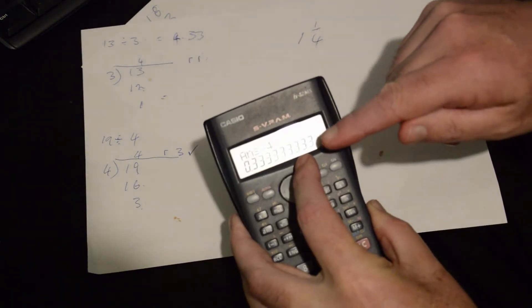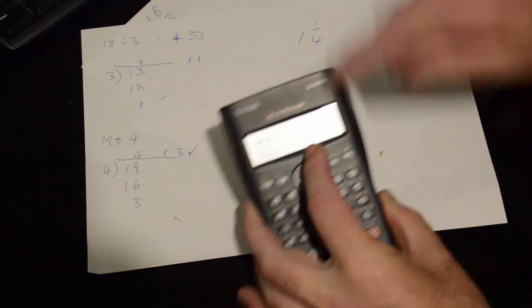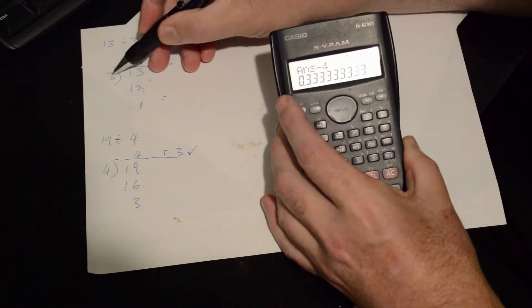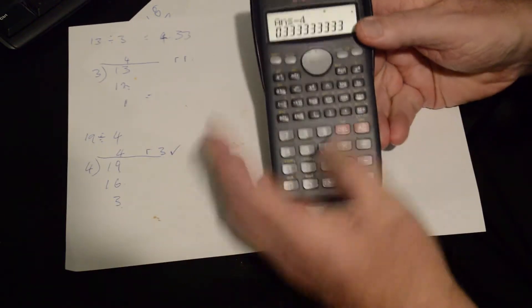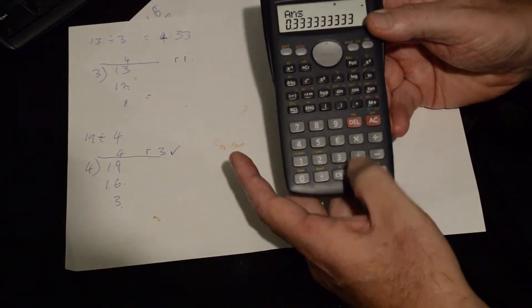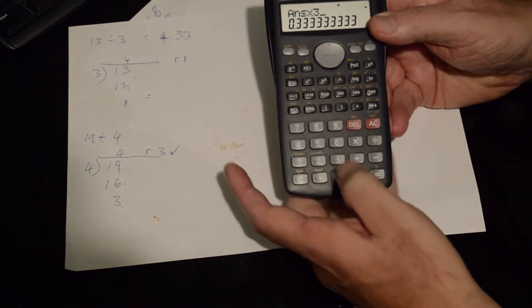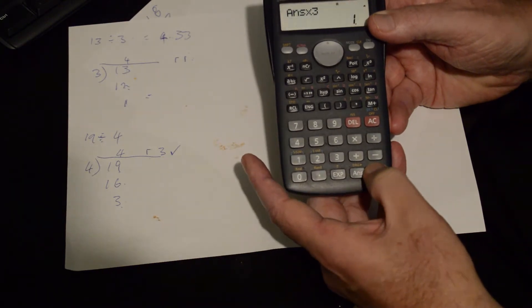Okay, so what you want to do is change that 333 into a remainder. So we're dividing by 3 so we've got to multiply the answer by 3. So we press the answer, we go times 3 and we've got equals 1.